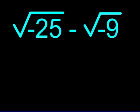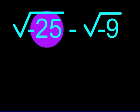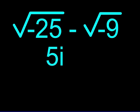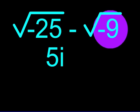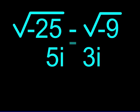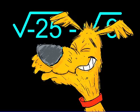From our previous examples, we learned that the square root of negative 25 was 5i and the square root of negative 9 was 3i. So we are left with 5i minus 3i, and this gives us our answer: 2i. Piece of cake!